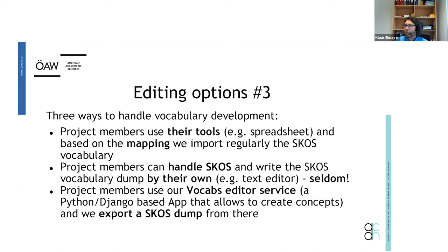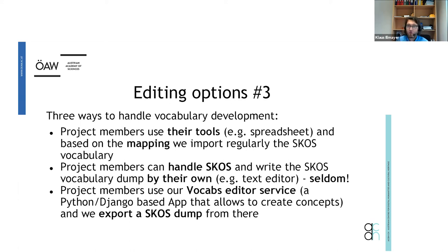In general, we have three ways vocabulary development is handled. First, project members use their own tools — most commonly spreadsheets — and we do the mapping and importing via scripts to create a SKOS dump and load it into the triple store. Second, very rarely, project members have the ability to create their own SKOS, perhaps using a text editor, and hand over the dump to us. The most requested option, however, is having a dedicated editor.